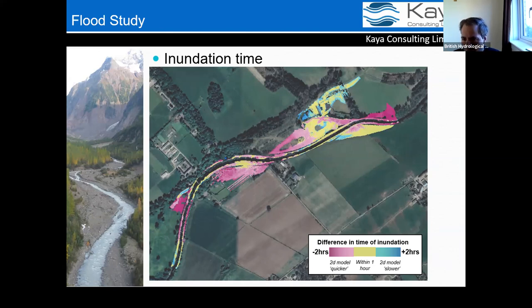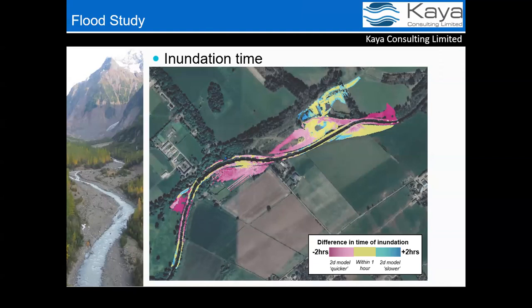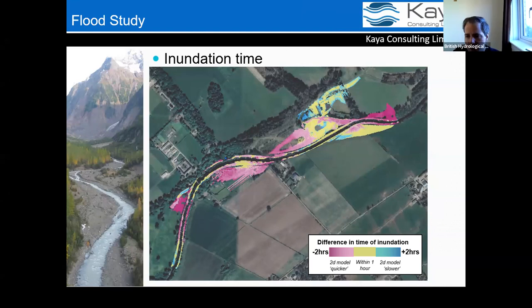The NFM structures comment is a good one — it's another area where the 2D approach comes in strongly. You can put in woody debris and structures across the channel, and if you want to look at NFM especially with detailed in-channel work, you probably need to do it in 2D.